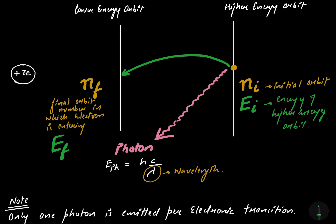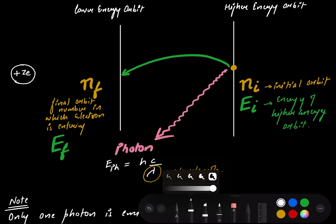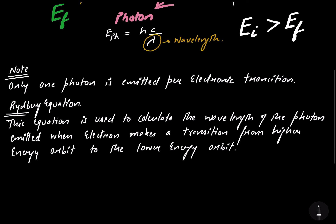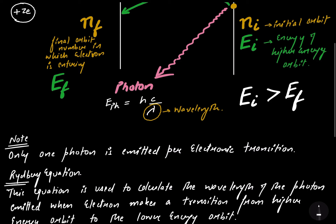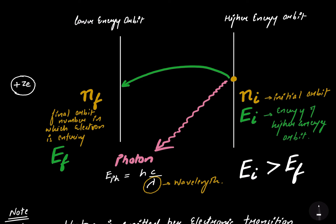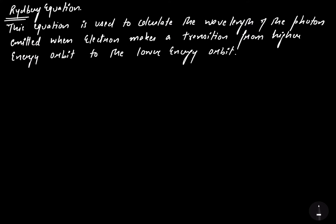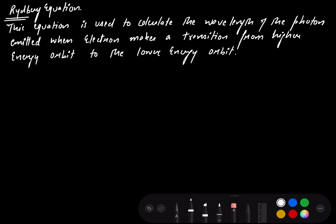From this notation, one thing is very clear: the energy of the initial orbit EI is greater than the energy of the final orbit EF, since the electron is moving from a higher energy orbit to a lower energy orbit. Now let us recall from the Bohr atomic model the formula for the energy of an electron in the nth orbit.